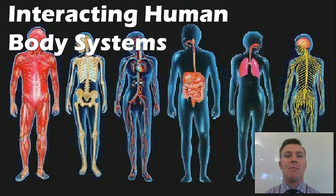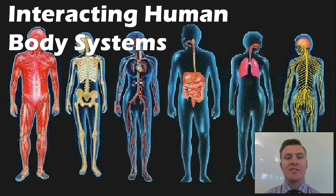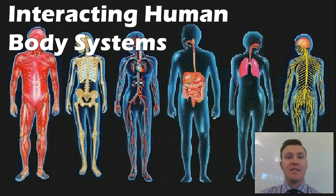As an organism, we're made up of a number of different body systems, each of those having its own organs and its own role within the body. There are about 13 different body systems that can be defined in the human body.